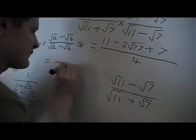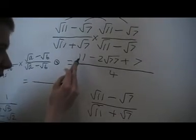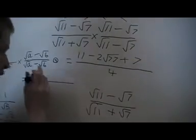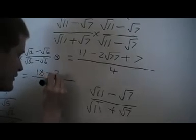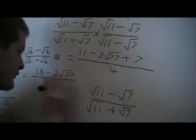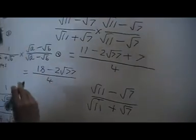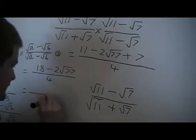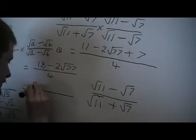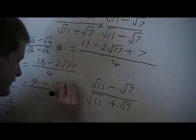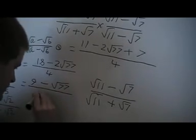Basically now, let's come over here. So we've got 11 plus 7, that's 18. Minus 2 root 77 over 4. And again, we can take out the common factor of 2. Then we've got 9 minus root 77 over 2. That's my final answer.